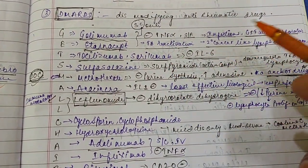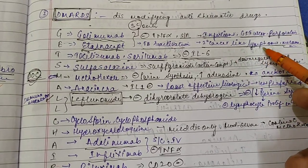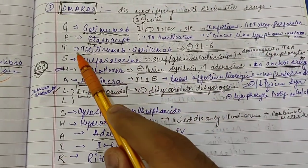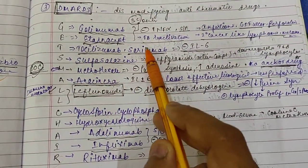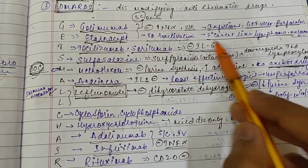Now the next, your Toclyzumab and Serilumab. Toclyzumab and Serilumab both are interleukin-6 inhibitors.